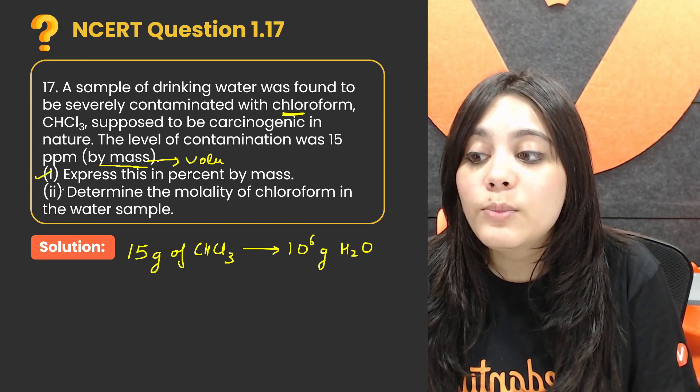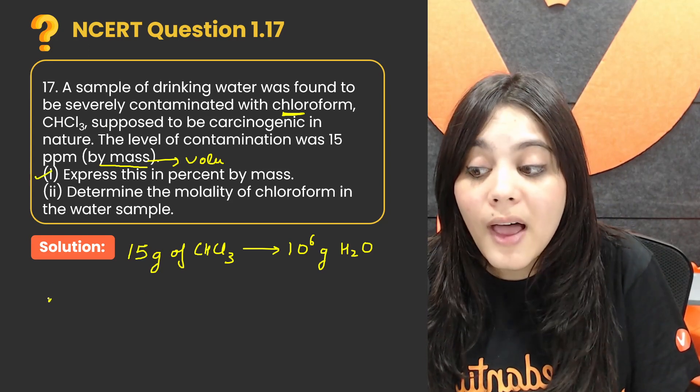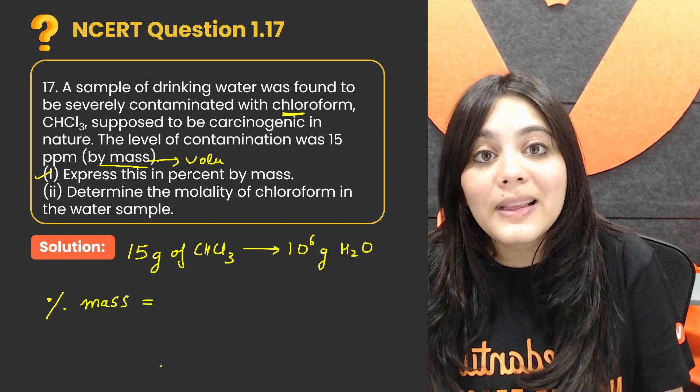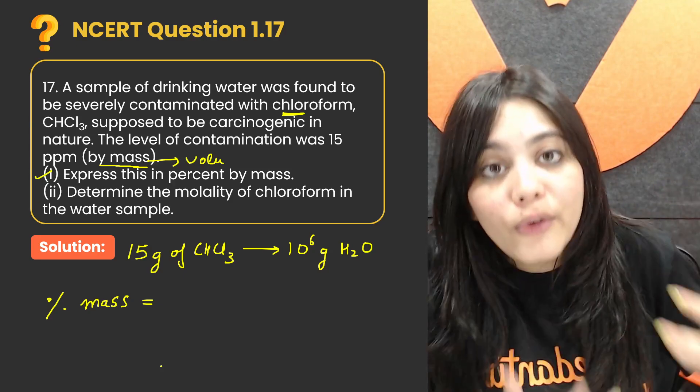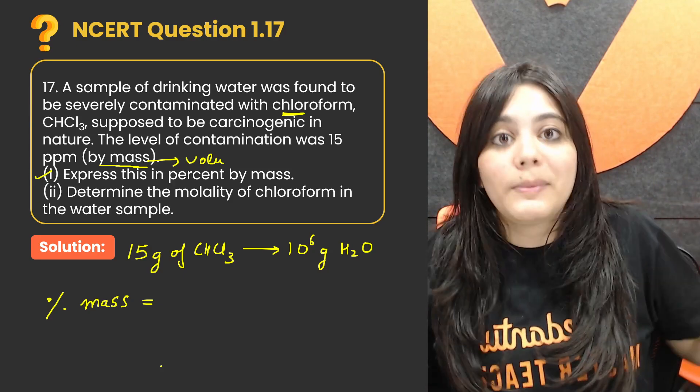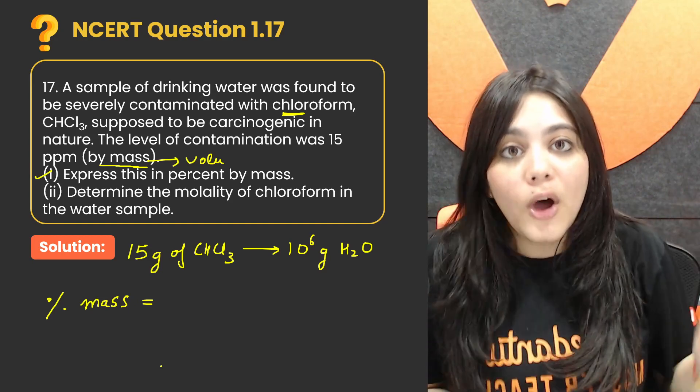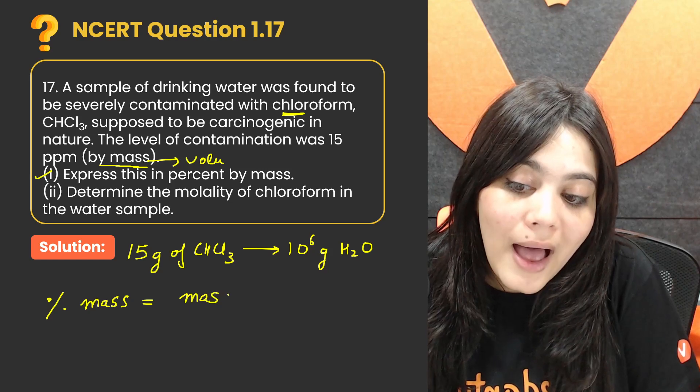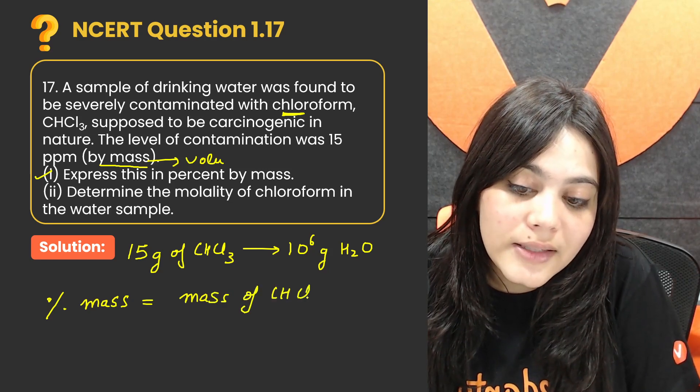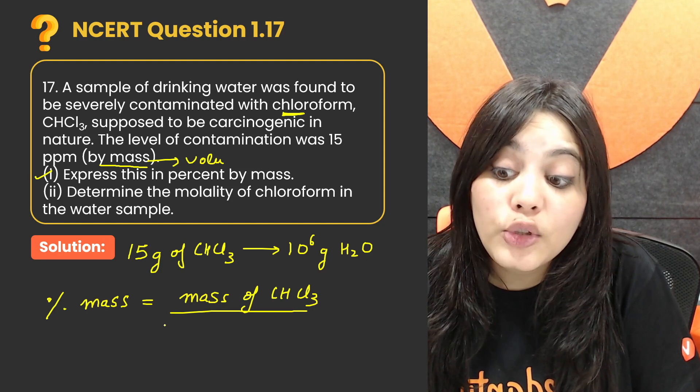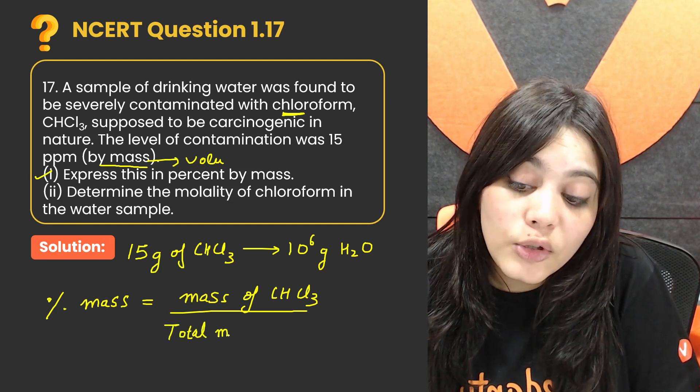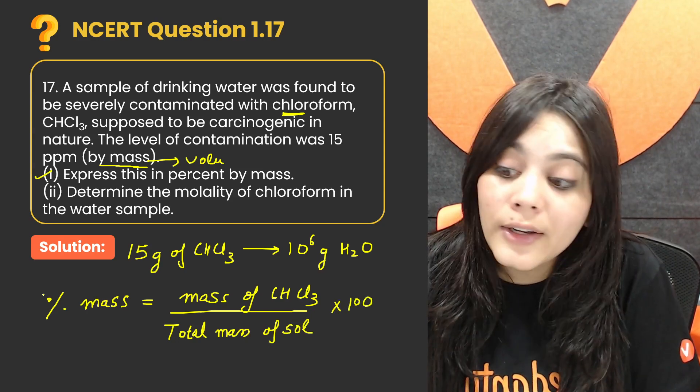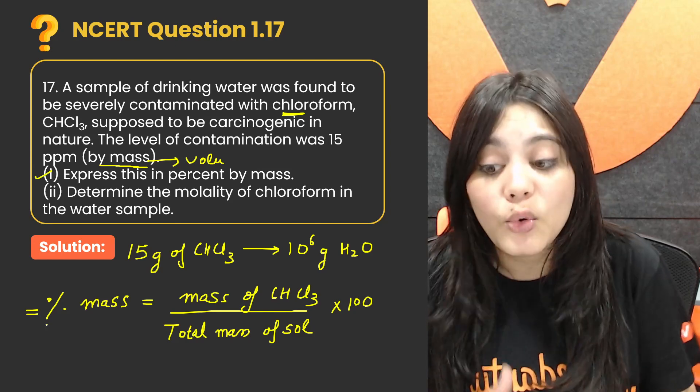Now the first question asks to express this in percent by mass. Percent by mass means express it. What does it mean? It means how much chloroform is in the whole solution. Mass of chloroform upon mass of solution is the percentage of mass. Mass of chloroform CHCl3 upon total mass of solution into 100.